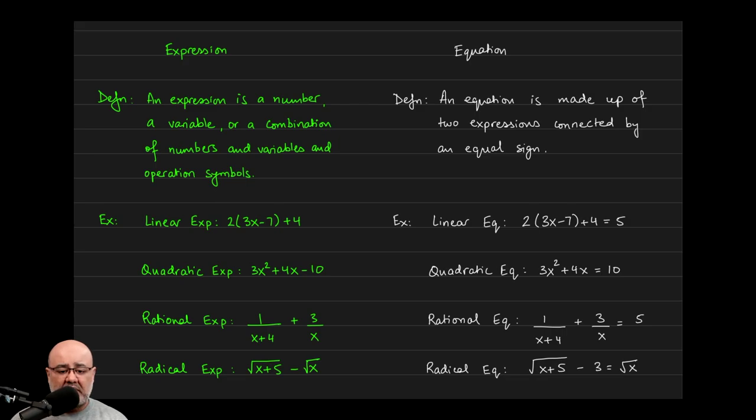And the last chapter that we'll deal with will be radical expressions. So these will be things that have square roots or cube roots in them. So again, just a minus sign in the middle, so this is a subtraction operation. On the other hand, if we include an equal sign, this becomes a radical equation.